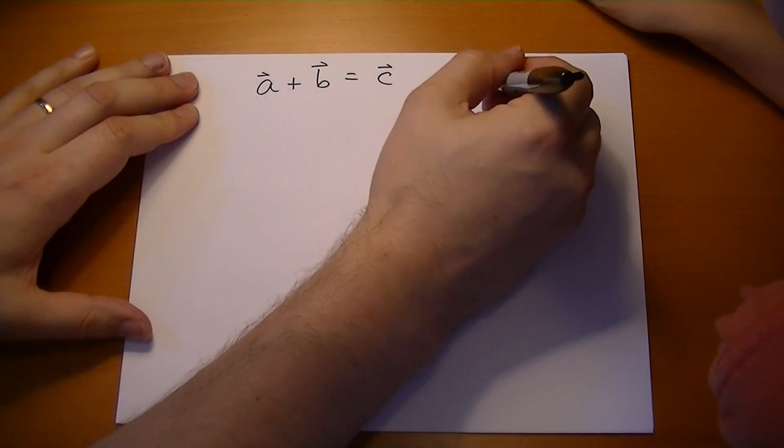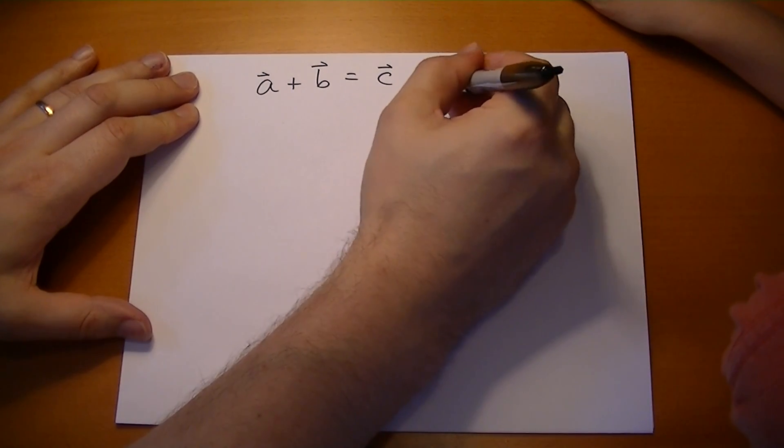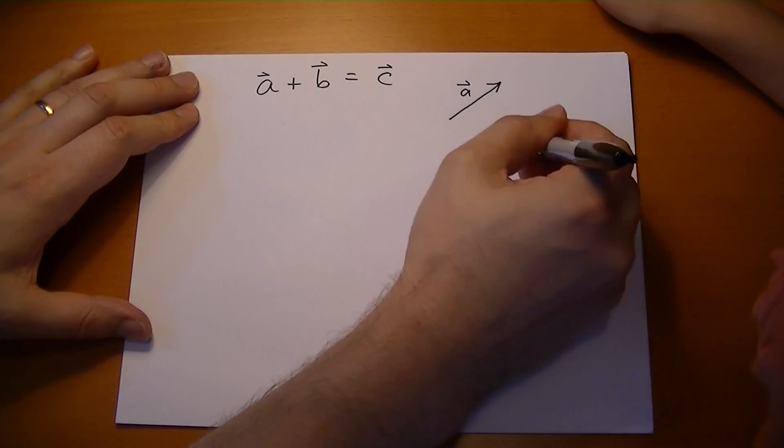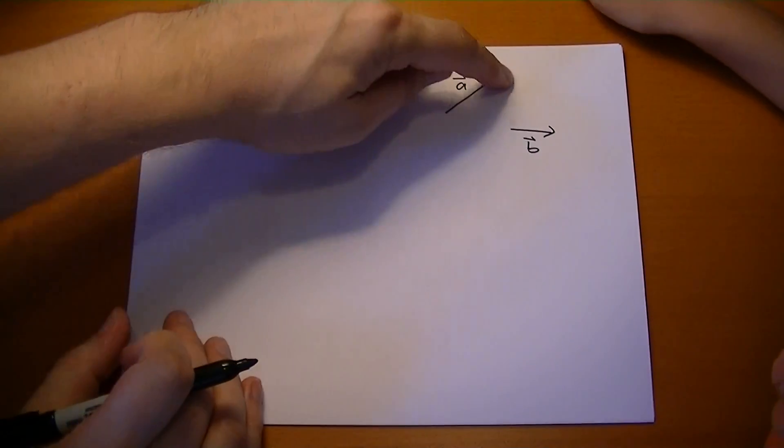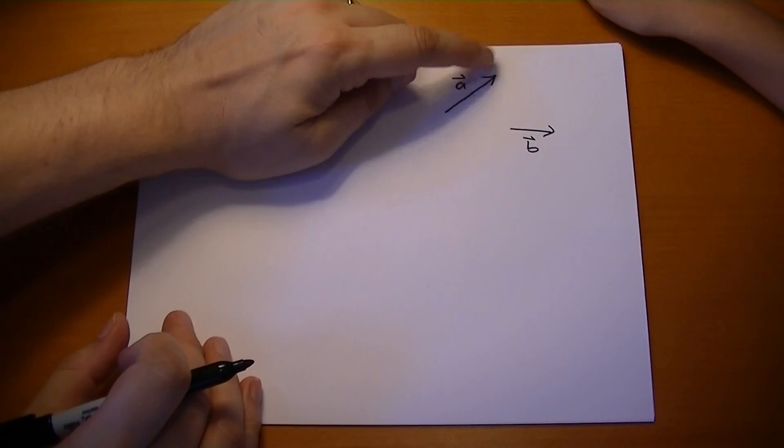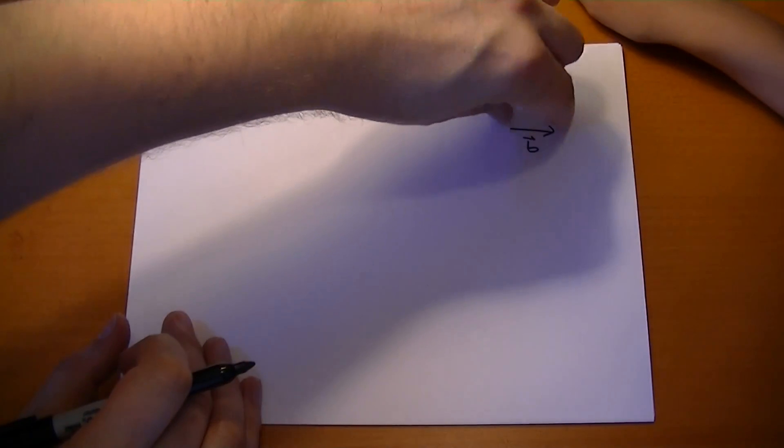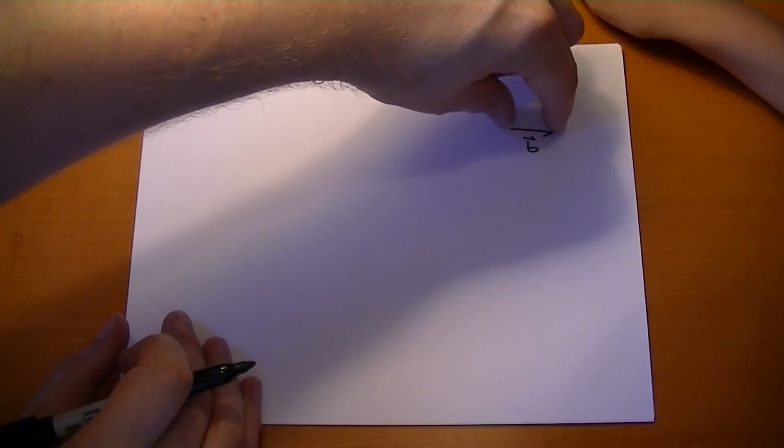And so what does this mean? Well, if you have some A vector over here and you have some B vector over here, what you do is you move the B vector so this tail is to the tip of A. So don't change the direction or the magnitude or length or anything like that. Just move it over there.